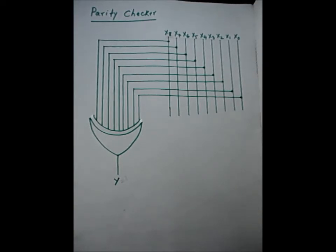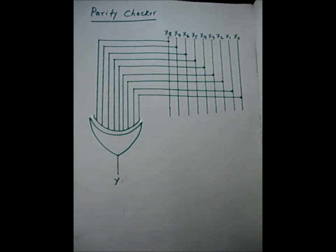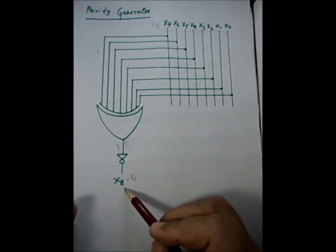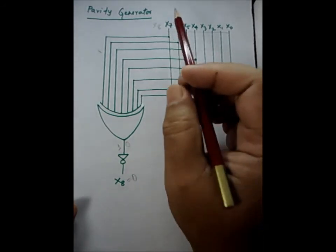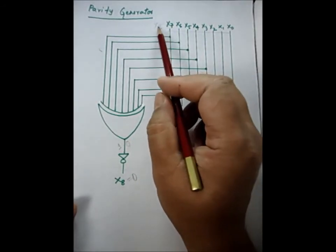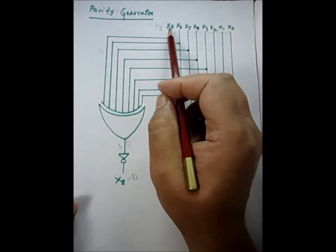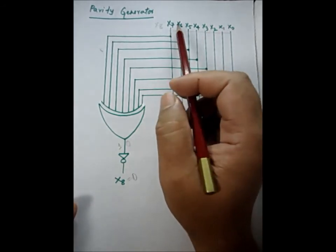Checking the bits has different uses, but one important use is in digital transmissions. During transmission, sometimes a one can become zero or a zero can become one, and therefore a wrong signal may get transmitted. Therefore, we use the parity generator to generate one bit and add it to the original bits, so that whatever we are transmitting, the nine-bit stream will always be of odd parity.